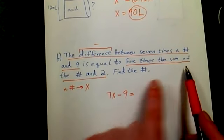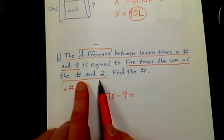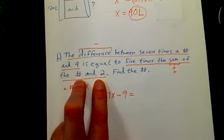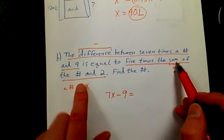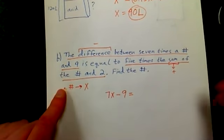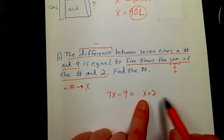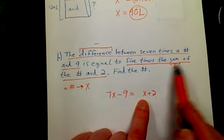It's five times the sum of the number and two. What does "sum" mean? Sum means to add. So what is the sum of the number and two? That's X plus two. I've summed the number and two, and we want five times that amount.